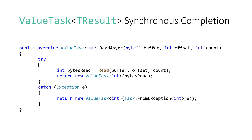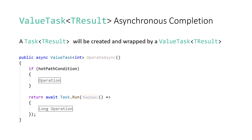There is no need for caching anymore, and that's exactly what we needed. Now let's see what happens during asynchronous completion. In these cases, if the hot path condition is false, we end up returning a Task, which is wrapped by a ValueTask and returned. We have to be careful: if the hot path condition is true, the operation returns a result like some new integer. But if it's false, we must create a new Task each time — it cannot be cached.